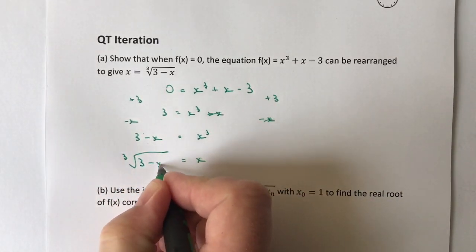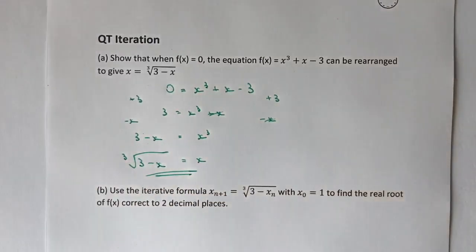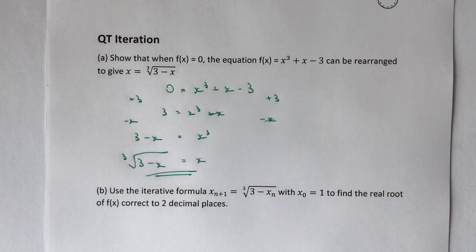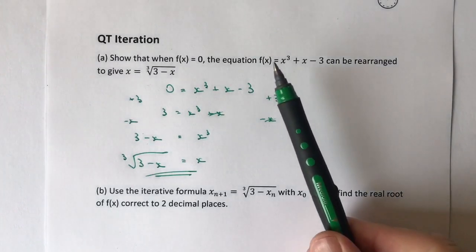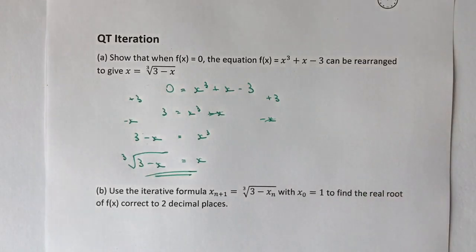Hopefully you can see that if x cubed equals three minus x, then x equals the cube root of three minus x, and that would be the answer to that particular question. Once you get used to these sorts of things, it's just a case of choosing which x term you're going to use.